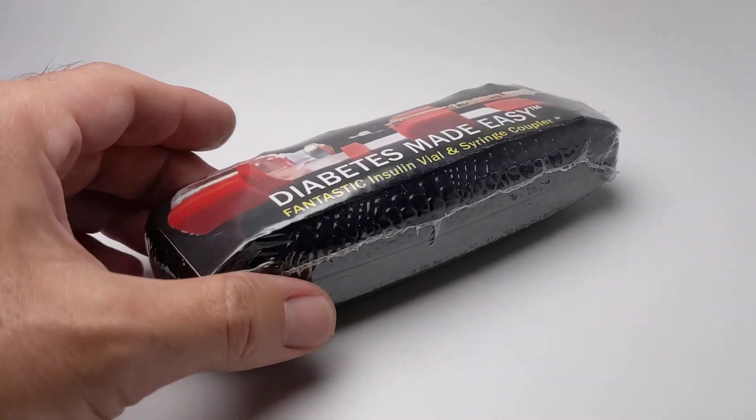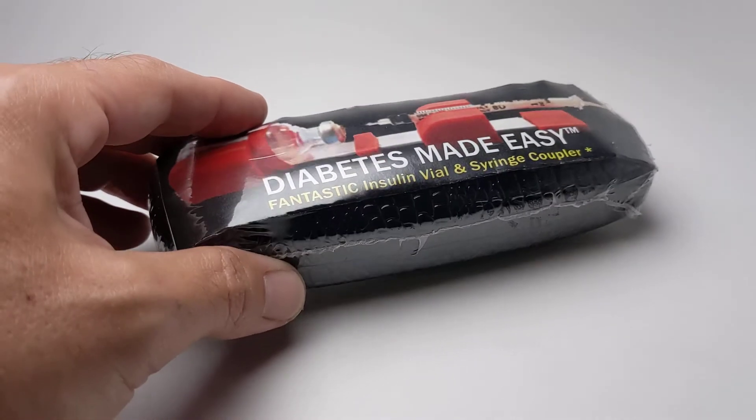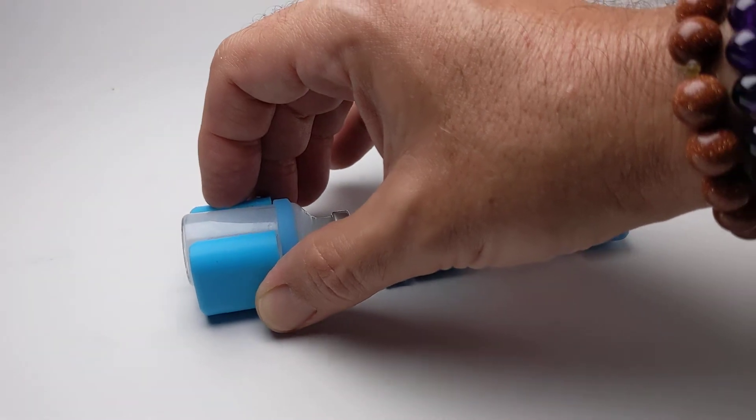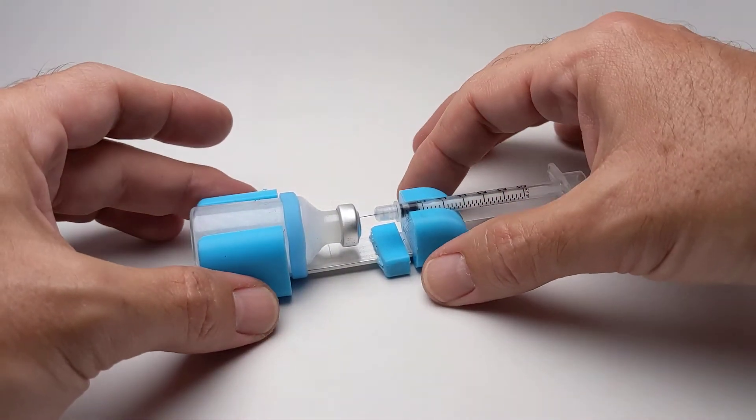Today we're going to unbox one and show you what it looks like when it arrives. This is 4.5 ounces all said and done, and when you open it up, what's inside is this device right here. This is known as the Fantastic Coupler.